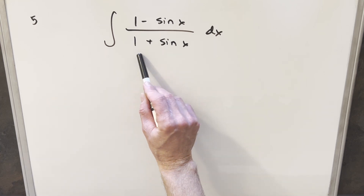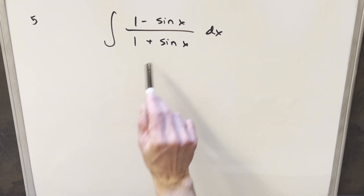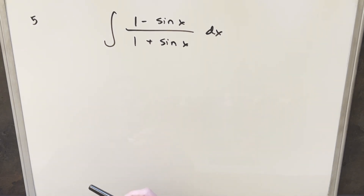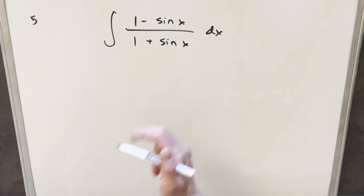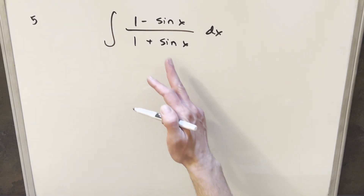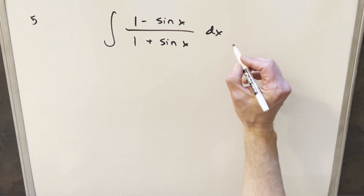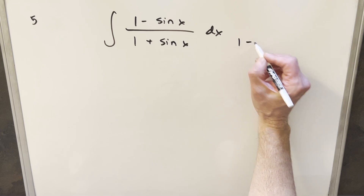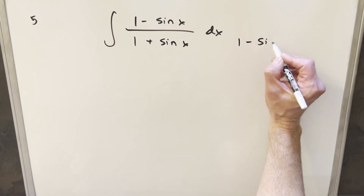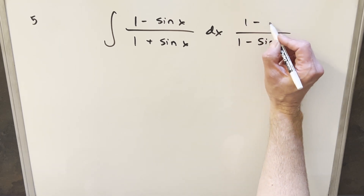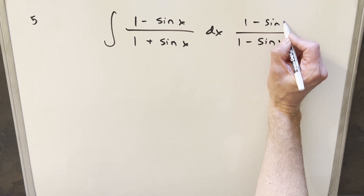Looking at the fact that we have 1 plus sine x in the denominator, this makes me think it might be a good case for a half-angle substitution. But in this case, I didn't do it that way. What I actually did was multiply by the conjugate in the numerator and denominator. So let's see how that looks if I multiply this by (1 minus sine x) over (1 minus sine x).